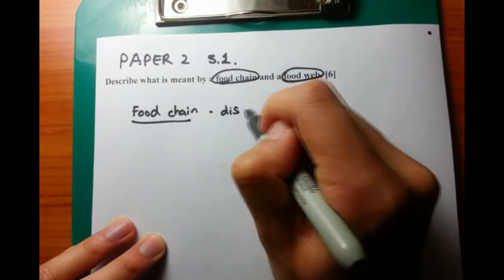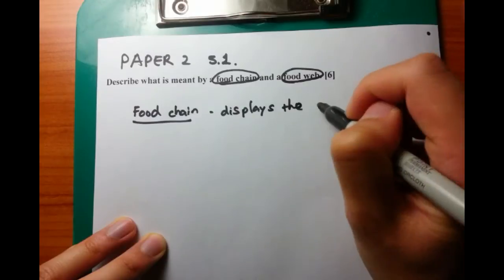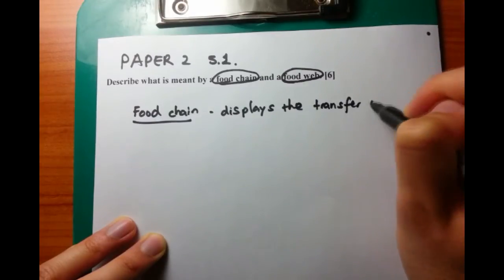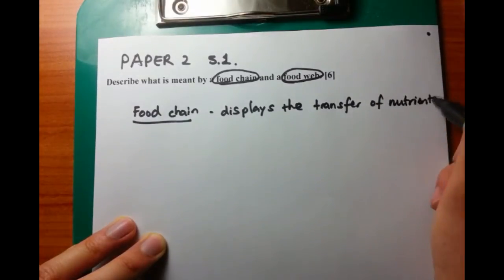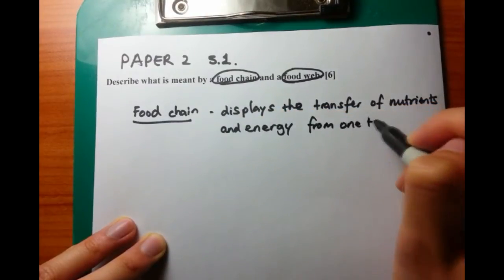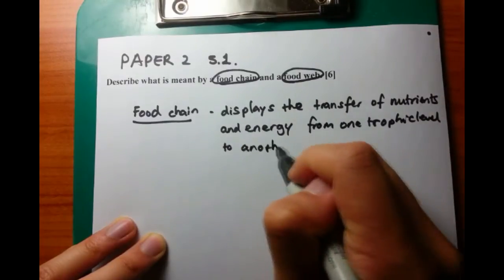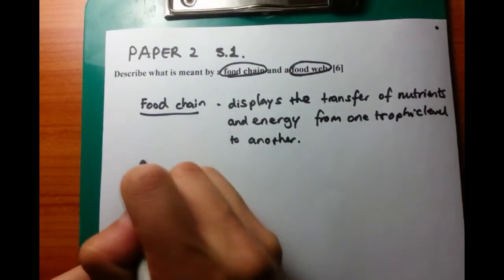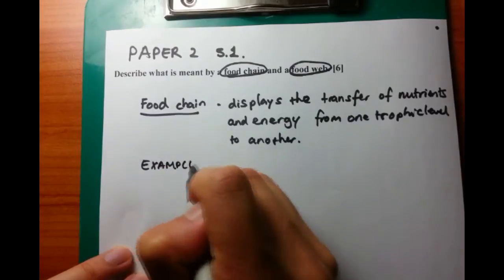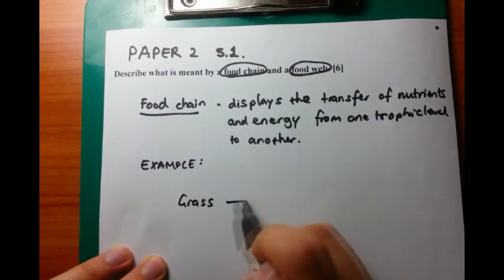After you've listened to a few of my videos, you'll realize that I'm very all about defining things. So the first thing we're going to do is define a food chain, and what a food chain is, is that it displays the transfer of nutrients and energy from one trophic level to another. And trophic level is another terminology, or another phrase rather, that you'll need to define, but we'll talk about that in a different instance.